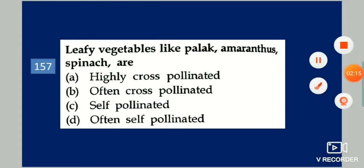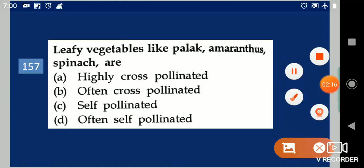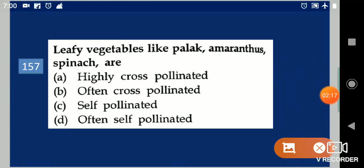Next question: Leafy vegetables like palak, amaranthus, and spinach are dash. Your options are: highly cross pollinated, often cross pollinated, self pollinated, often self pollinated. Your answer is highly cross pollinated.